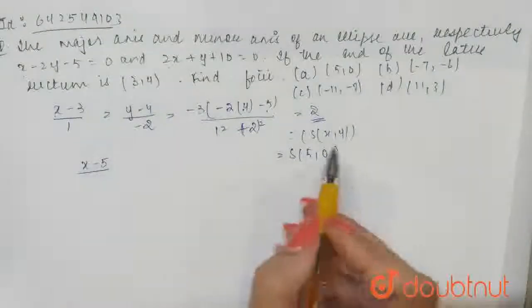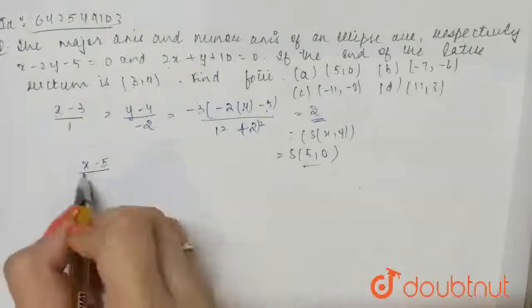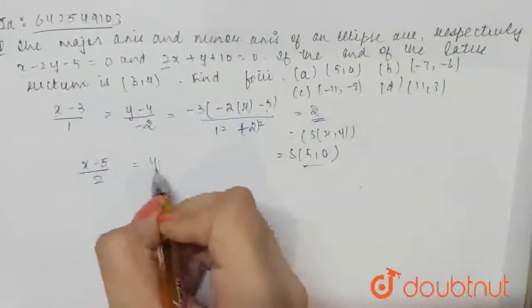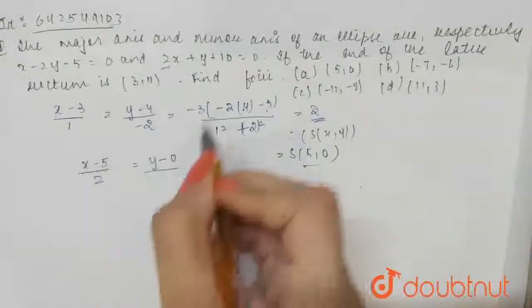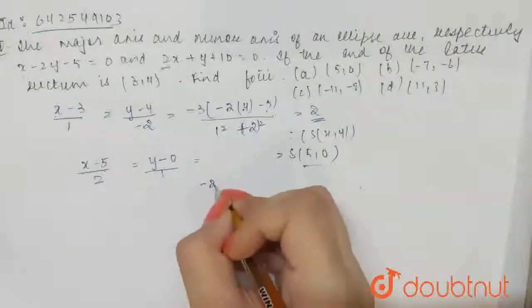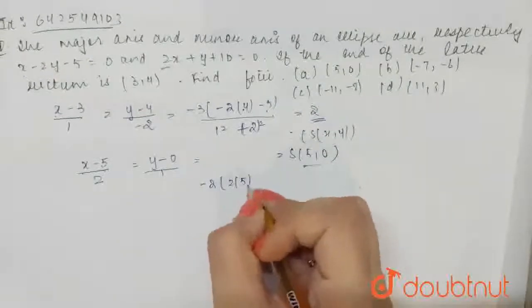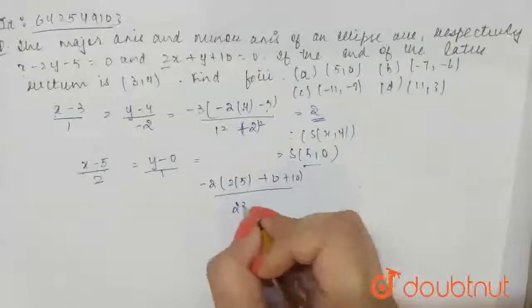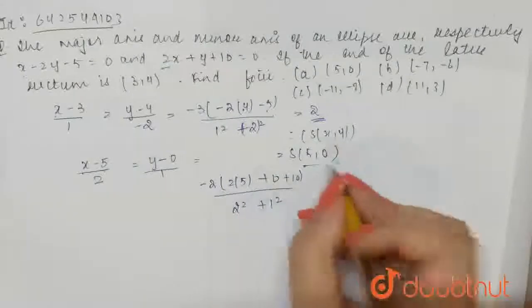So, if we calculate this with respect to this point, this will be x minus 5 divided by 2 equals y minus 0 divided by 1. Now, if you calculate this, I will write minus 2 into 2 into 5 plus 0 plus 10 divided by 2 square plus 1 square. So, this will be 8, right?